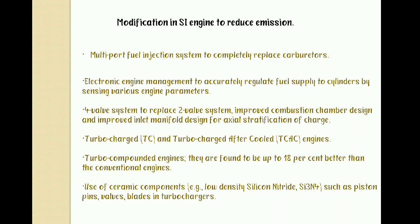Additional modifications include turbocharger and turbocharger with aftercooler. Turbo-compounded engines are found to be up to 80% better than conventional engines, and more power can be obtained from turbocharged engines. Use of ceramic components of low density such as silicon nitride (Si3N4) — for example in piston pins, valves, and blades in the turbocharger — are among the modifications in SI engines to reduce emissions.